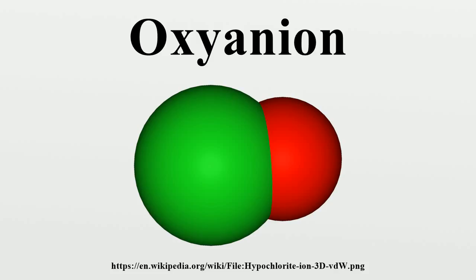By contrast, the univalent anions perchlorate and permanganate are very difficult to protonate and so the corresponding acids are strong acids. Although acids such as phosphoric acid are written as H3PO4, the protons are attached to oxygen atoms forming hydroxyl groups, so the formula can also be written as OP(OH)3 to better reflect the structure. Sulfuric acid may be written as O2S(OH)2, which is the molecule observed in the gas phase.